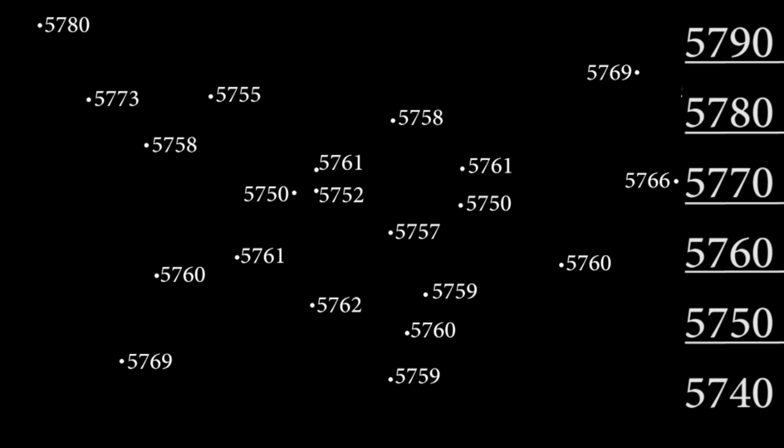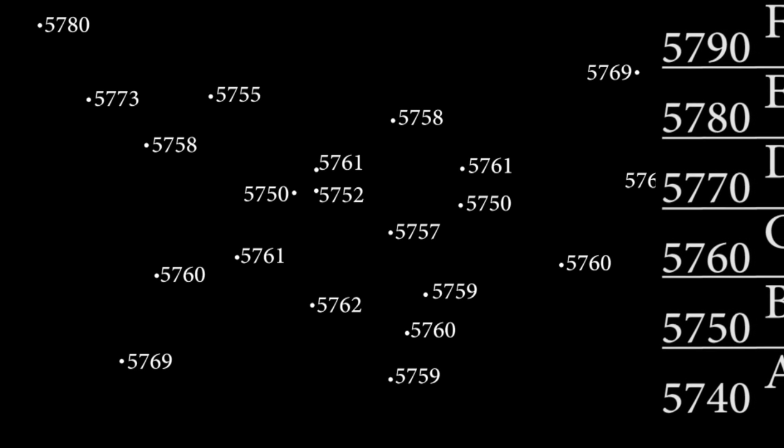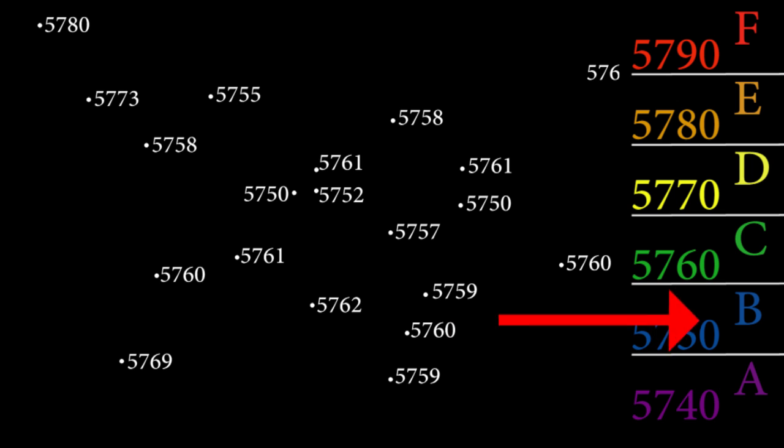Now label each bin somehow. You can say everything in between the two lowest contours is in bin A, next up is bin B, and so on. Or maybe you have colored pencils and can make the bottom set red, then orange, then yellow, and so on. We can choose to put the bottom or the top contour into each bin, but we must use only one and be consistent.